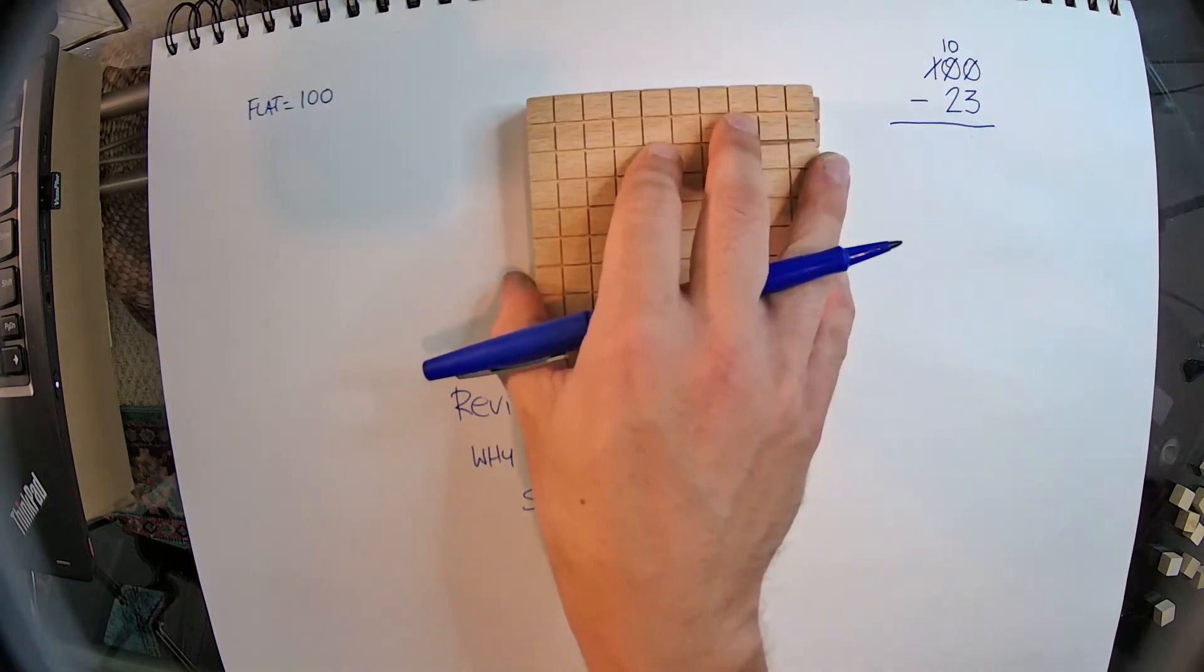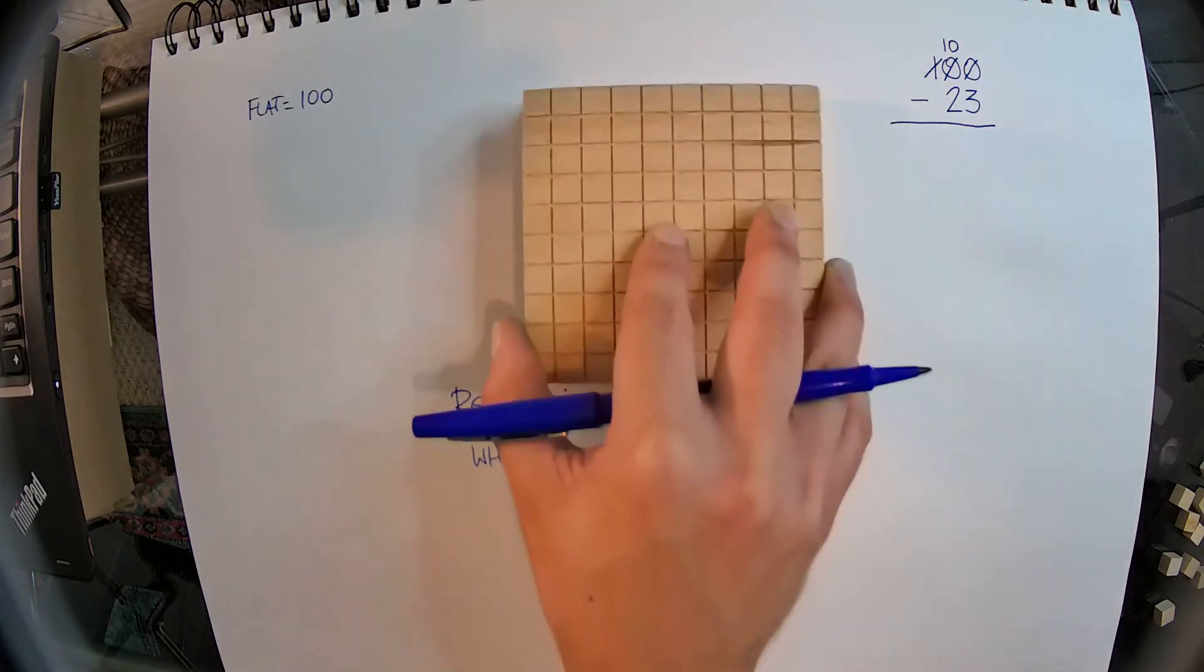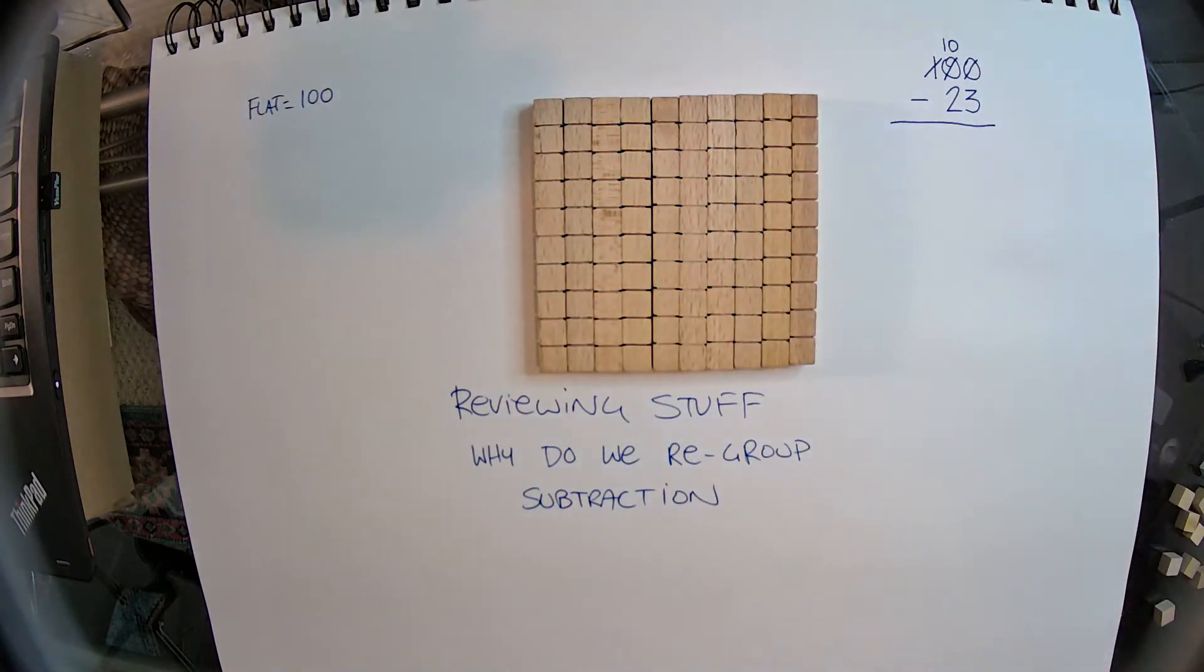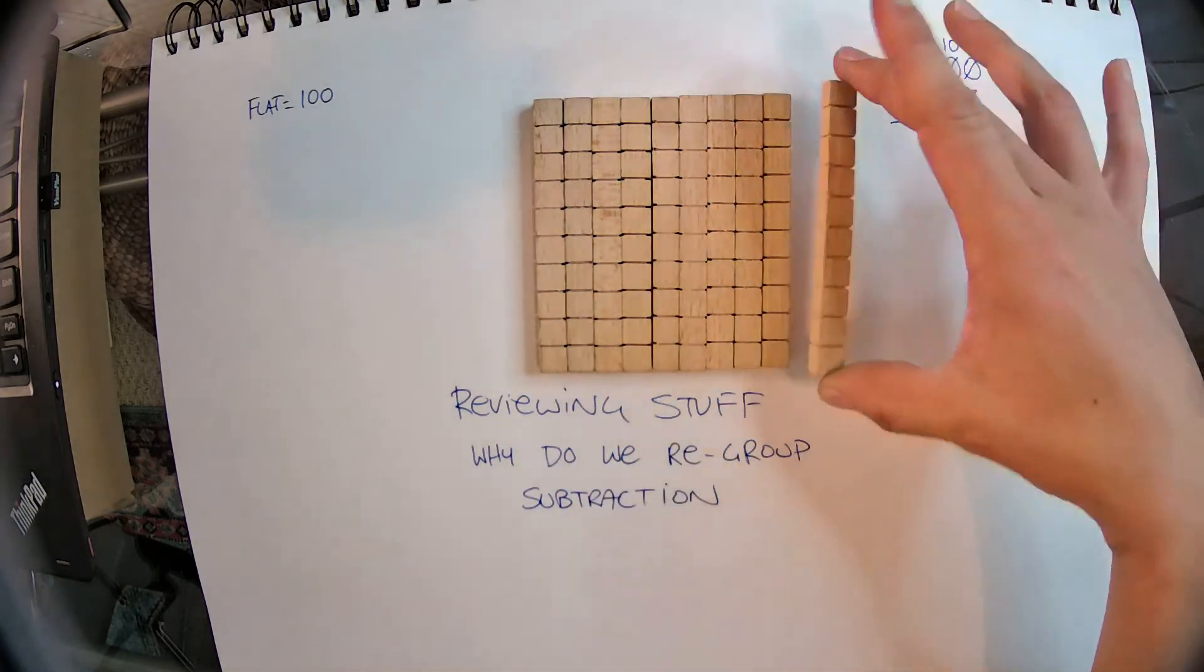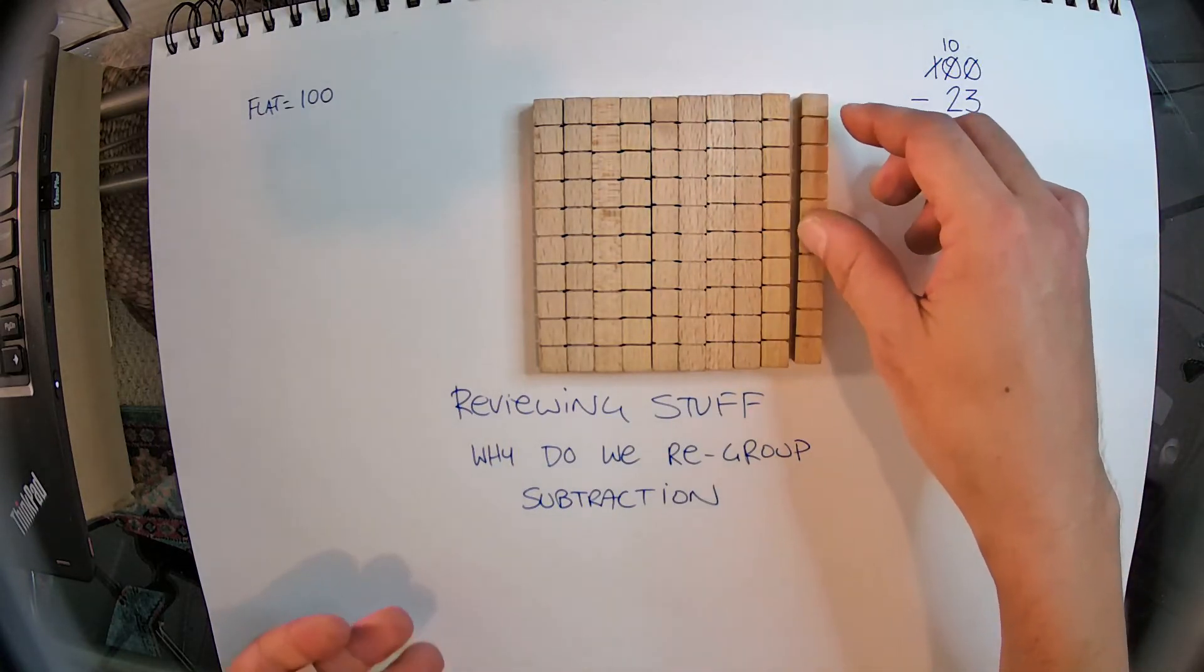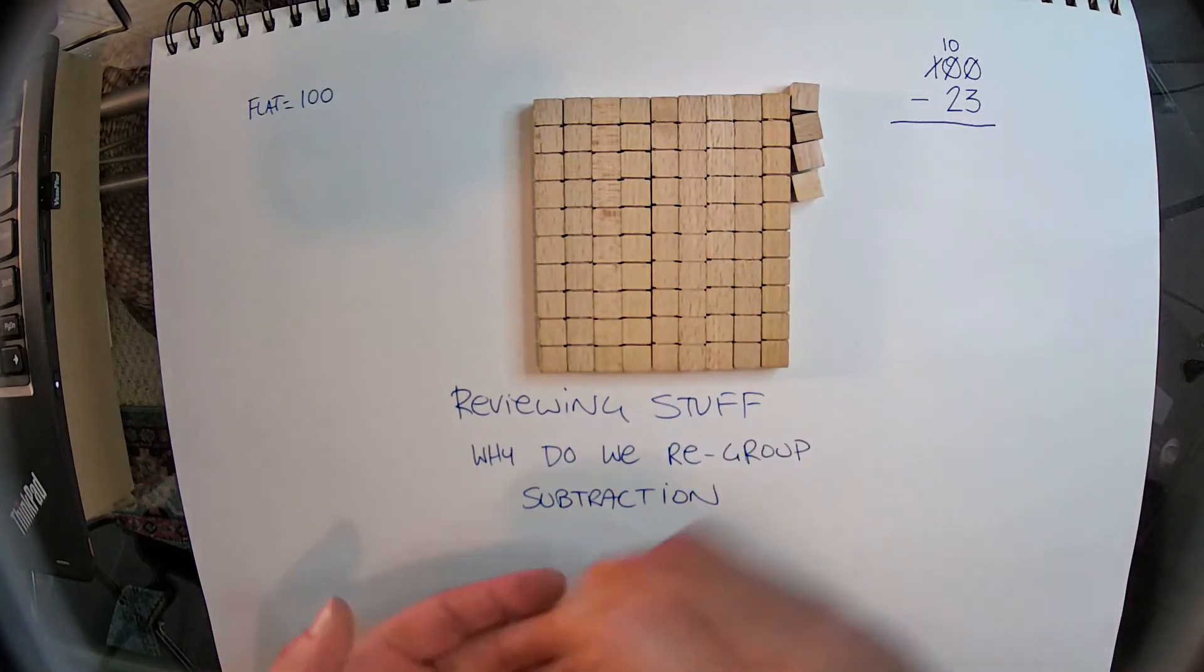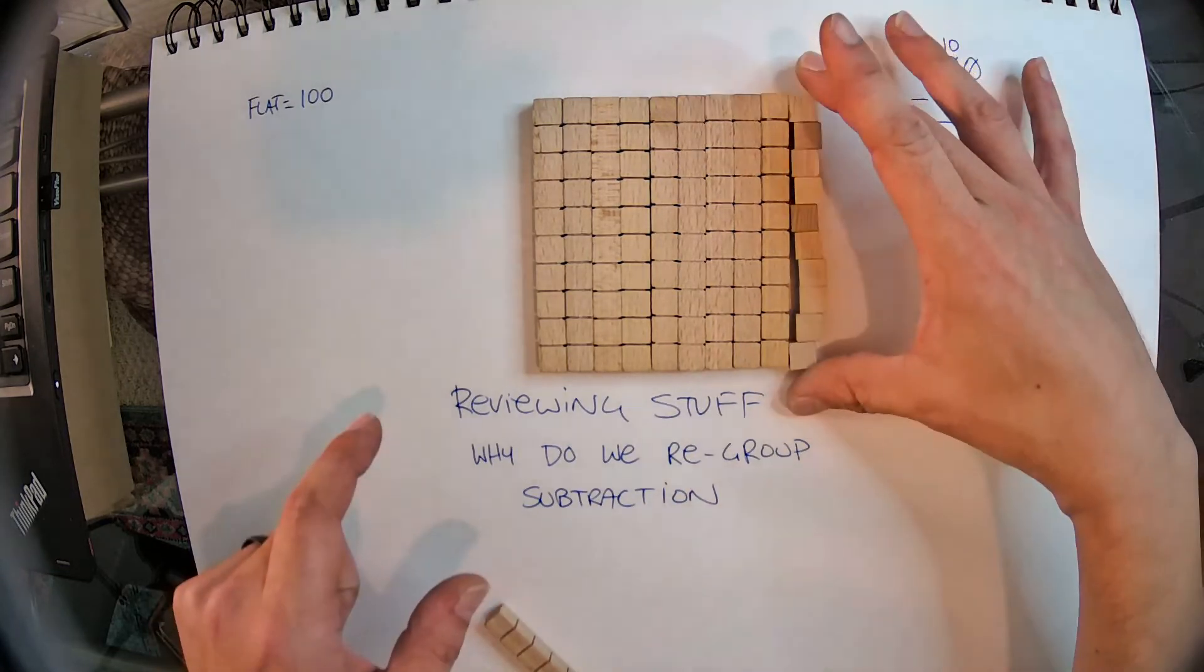Because what we just did is we took this one whole 100 and turned it into 10 tens. Did you see how that's the exact same amount? So now I have 10 tens. Can I take away my 3 ones from my 10 tens yet? Not yet, because this is still 10 sticks, so I can't just take 3 of these units off until I regroup again. So what I'm going to do is instead of using one 10 stick, I'm going to replace it with 10 units.